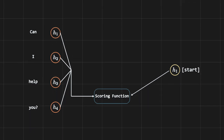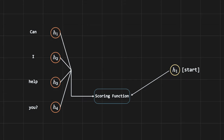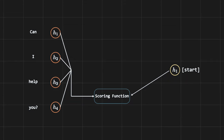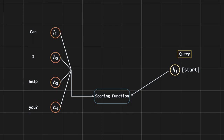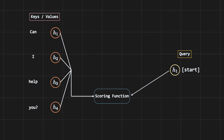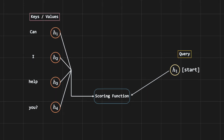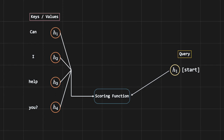The first step is to calculate the alignment score — how much attention each Hindi token should pay to every other English token. In transformer terminology, this Hindi token is a query and the English tokens are keys/values, just like a database where you make a query and get desired rows.